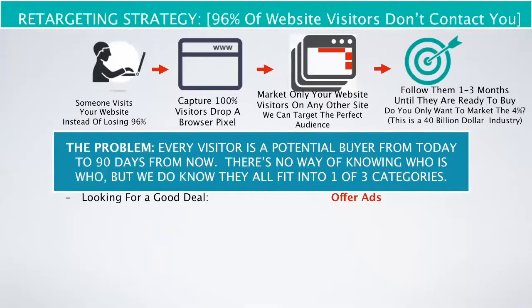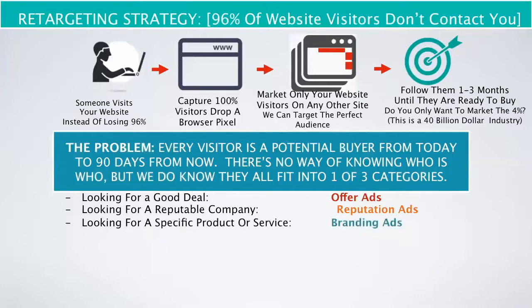They're also looking for a reputable company. So do you have testimonials on the homepage? Do you have streaming reviews? The industry says that people are looking for between six and ten reviews so they can make a decision on whether you're a reputable business they want to work with. Maybe you could have an ad on your main page featuring one of your five-star reviews. The third category: people are looking for a specific product or service — a particular item that you have.